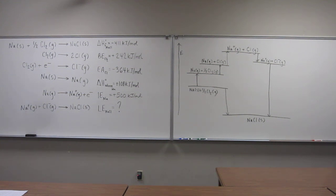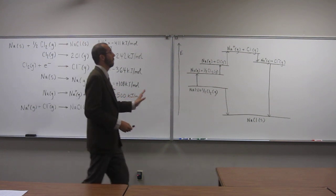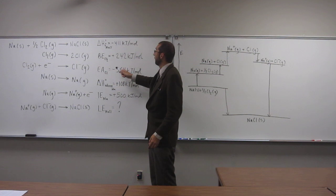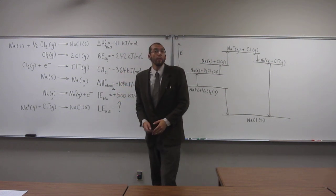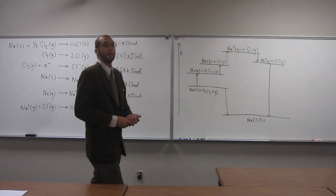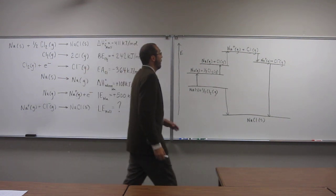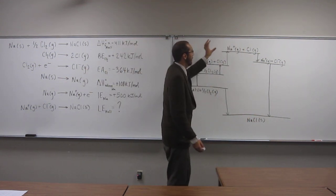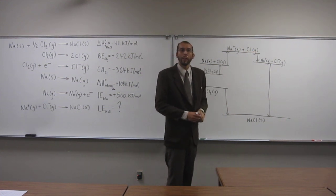So we can use kind of a Hess's Law approach to this equation because we can figure out all of these values experimentally. So it would be nice to be able to figure out this. If we add up all those other values, we should be able to get that.